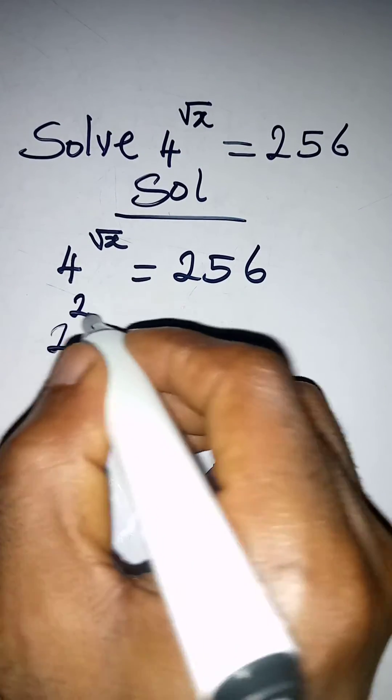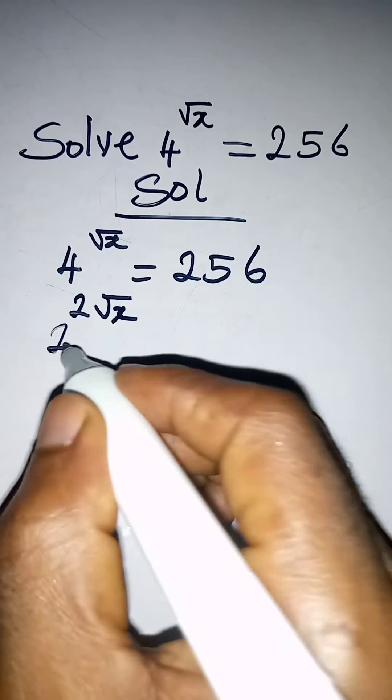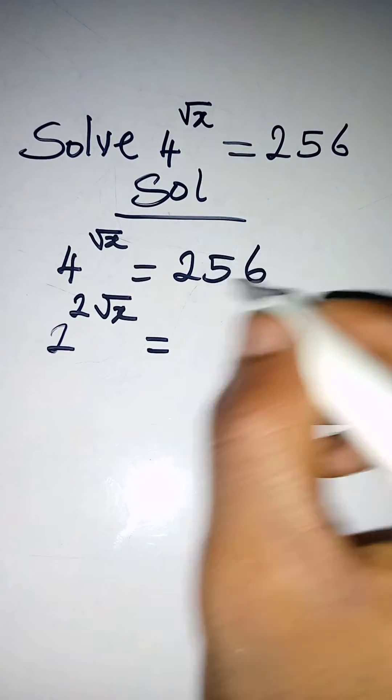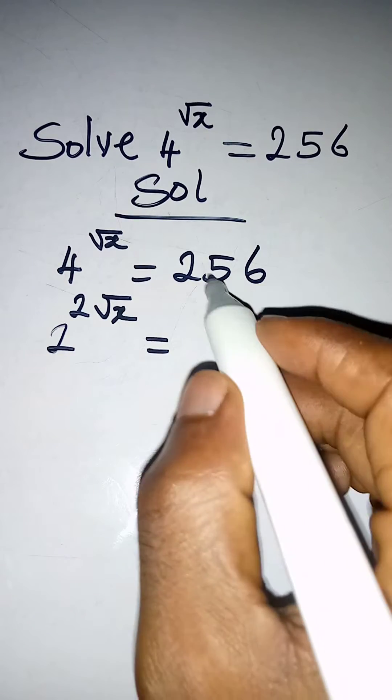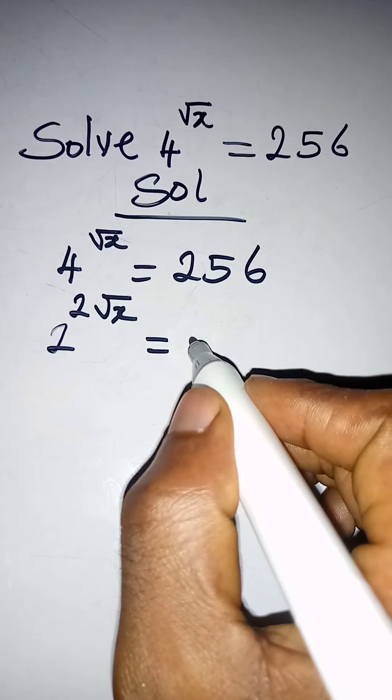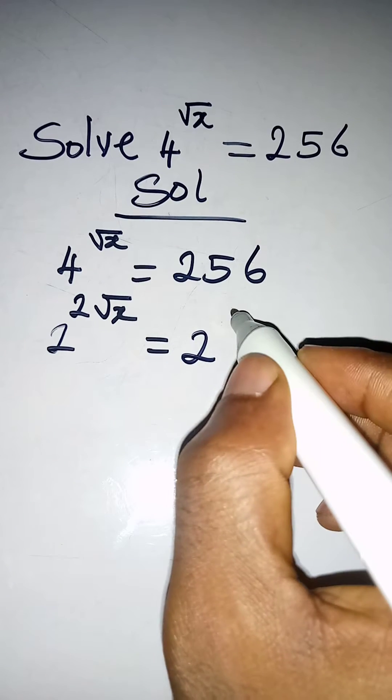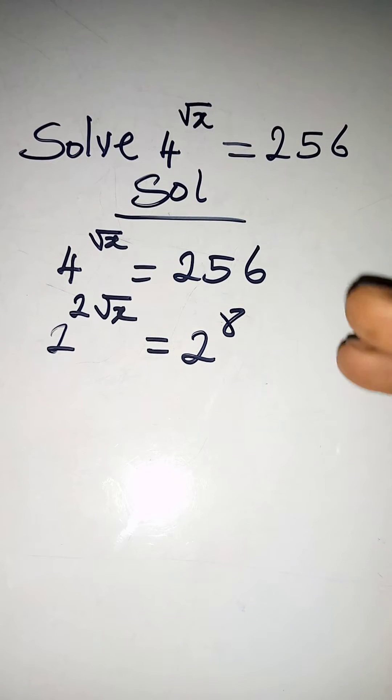We'll have 2 to the power of 2 root x, because 2 squared is 4, then equal to, if you express 256 in index form, it will give us 2 to the power of 8, because 2 times 2 times 2 in 8 places will give us 256, right?